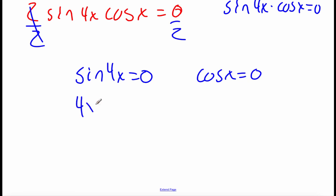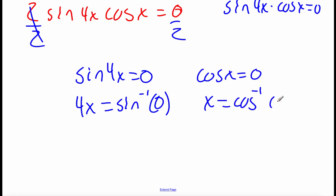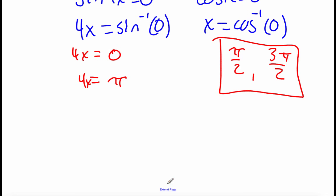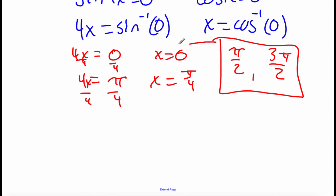Rewriting each as an inverse: 4x equals arcsin(0) and x equals arccos(0). On the unit circle, sine equals 0 at angles 0 and π, so 4x equals 0 and 4x equals π. Cosine equals 0 at π/2 and 3π/2, so x equals π/2 and x equals 3π/2. Dividing the left side by 4: x equals 0 and x equals π/4. Since we're keeping angles between 0 and 2π, these four angles — 0, π/4, π/2, 3π/2 — are our answers.